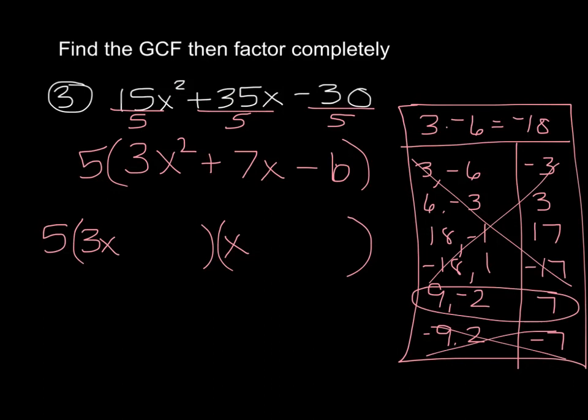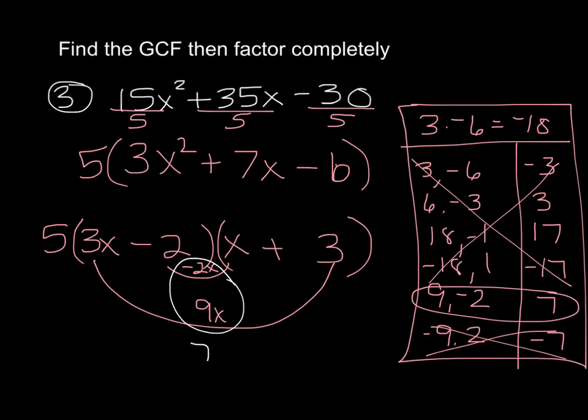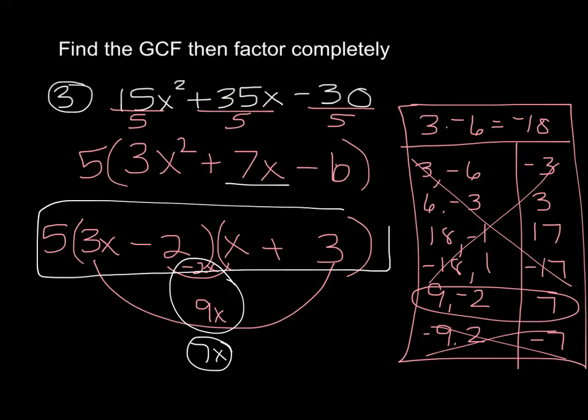So we want this one right here. So that means that 3 times something has to be one of these two numbers. Well 3 can't multiply by anything to be negative 2. So it will multiply to be 9. That means that the 9x needs to go on this line and 3 times a positive 3 over on this side. So 3 times the 3 will give you 9x. And then the negative 2 needs to go in this one because negative 2 times x is negative 2x. Add those together and you get a 7x to check your answer. So that matches that. And there would be your solution.